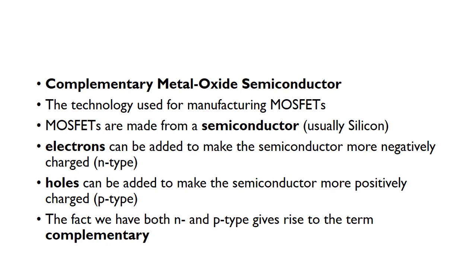Holes are actually the absence of an electron. So when we say holes can be added, we're really saying we're going to remove some electrons from the semiconductor — removing negative charge and leaving behind more positive charge. We're essentially adding holes into the semiconductor to make it more positively charged. That's p-type semiconductor.